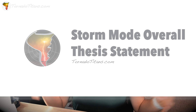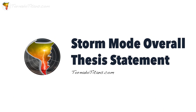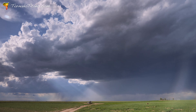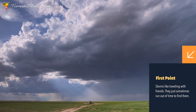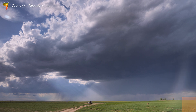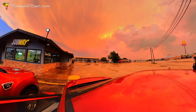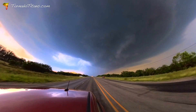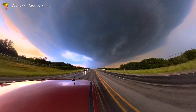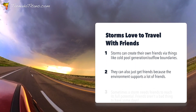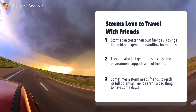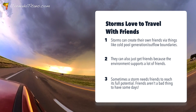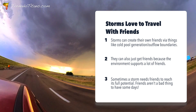I have an overall thesis statement about storm mode: all things lead to linear storms. Storms want to travel with friends — they don't like being alone. Some days storms do stay isolated, but my theory is that it doesn't mean they didn't want to have friends; it just means they ran out of time to find friends. Days where a storm is isolated and dies by itself — had it kept going a little bit longer, we probably would have had a bowing segment or a cluster. With time, storms are going to be more crowded.